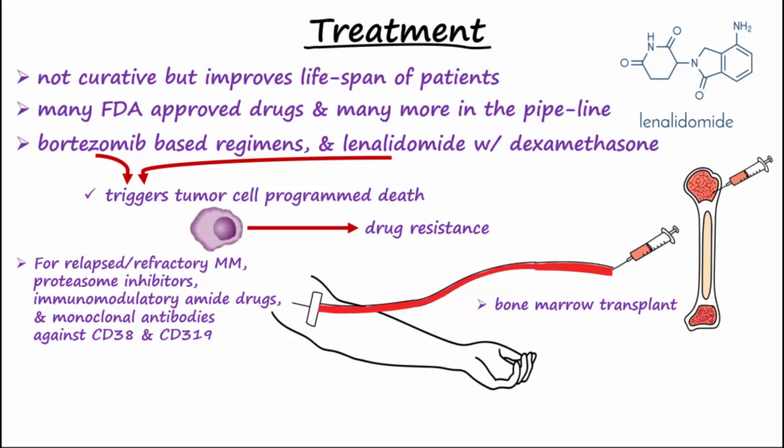Bisphosphonates and radiation therapy may be used for the painful lesions. Erythropoietin may be used for the anemia. The first cell-based gene therapy was approved in 2021.